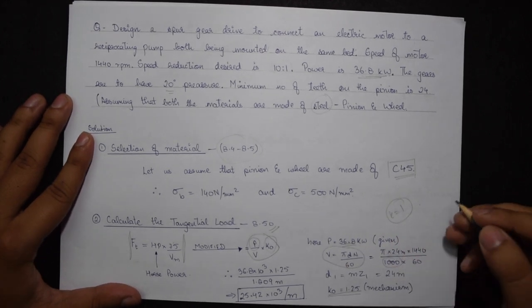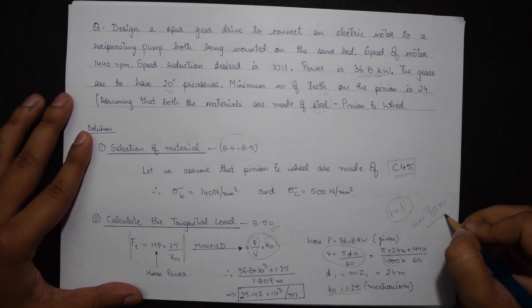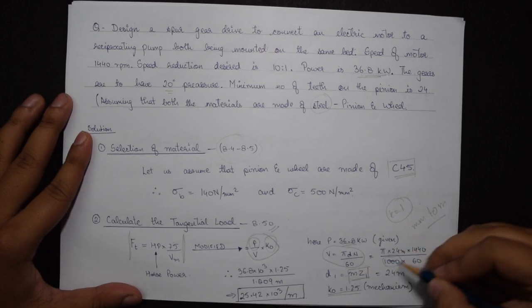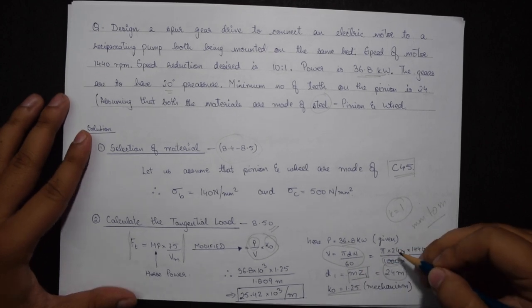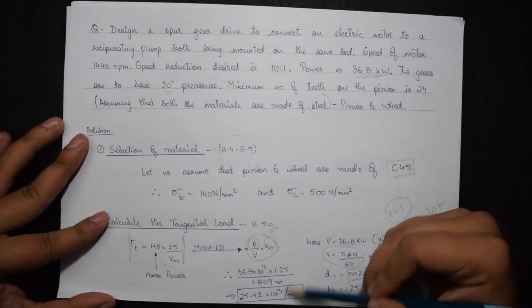This thousand comes in because I want a conversion from mm to meters. Also my D1 equals M times Z1, that equals 24 times M. So my FT comes out in terms of M, that is 25.42 times 22.3 divided by M.